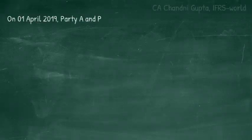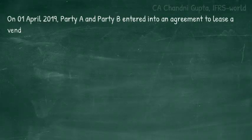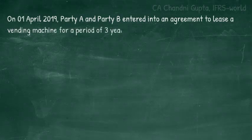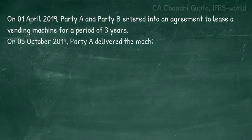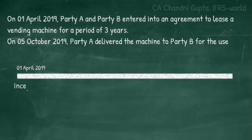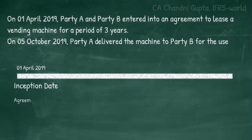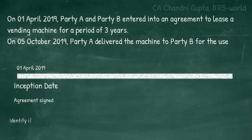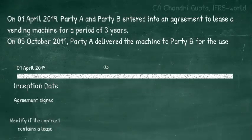On 1st April 2019, Party A and Party B entered into an agreement to lease out a vending machine for a period of three years. On 5th October, Party A delivered the machine to Party B for use. As per the definitions, 1st April 2019 will be our inception date, because on this date Party A and Party B have signed the agreement — they have committed to the terms and conditions. So on inception date we will identify if the contract contains a lease.